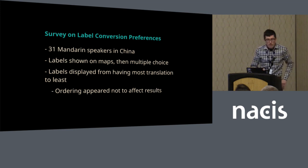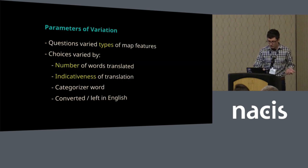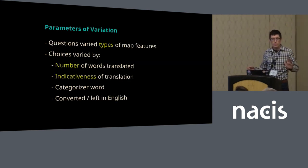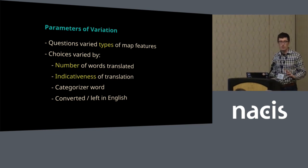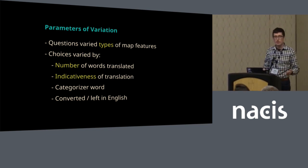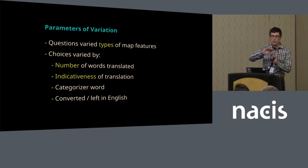I distributed an online survey to 31 Mandarin speakers in China. The questions on the survey varied the types of map features: there were human settlements, natural features, points of interest, and roads.